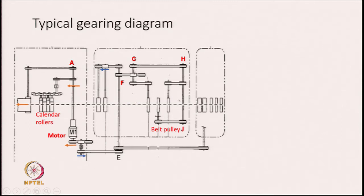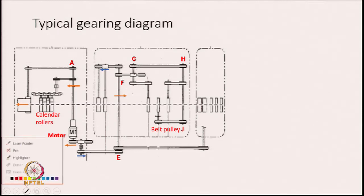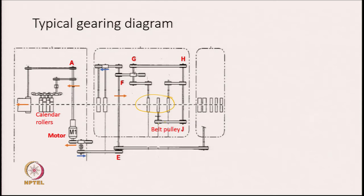These 3 rollers that you see here are the drafting unit. The motion goes to the front roller, and from there this motion goes to the back roller. From here to belt pulley J, it goes to the middle roller also.